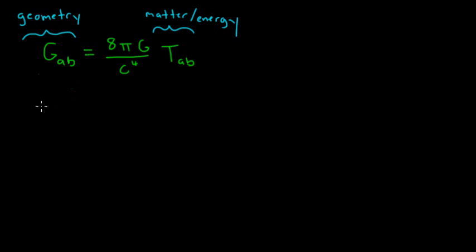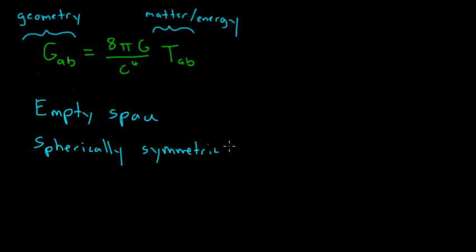So one way that we could start is we could just say, I'm going to assume that I have empty space. And I'm going to assume that this space is spherically symmetric, which just means that if I'm standing at the center of this space, then in whatever direction I'm looking, the space looks the same.